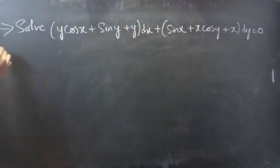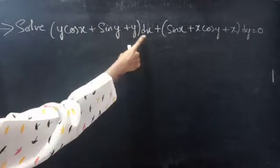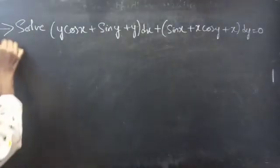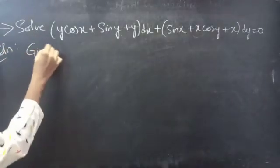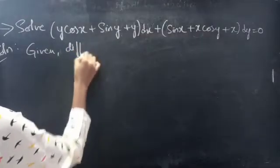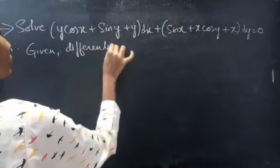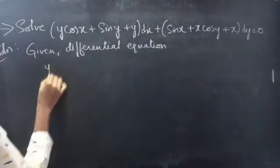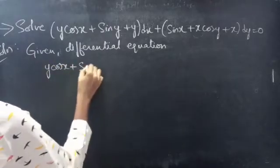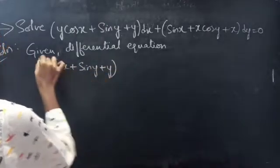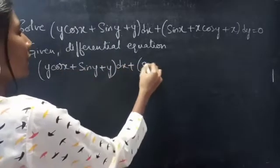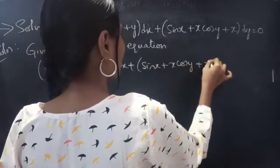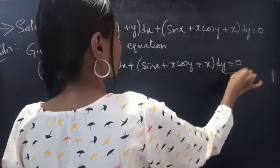Problem to solve: y cos x plus sin y plus y, into dx, plus sin x plus x cos y plus x, into dy equals to 0. Consider it as equation 1.